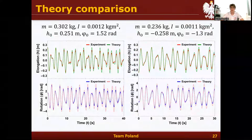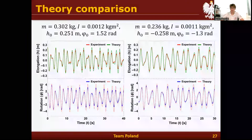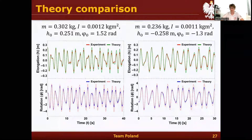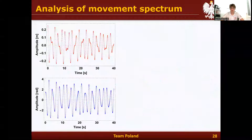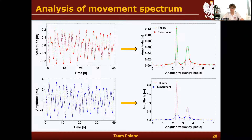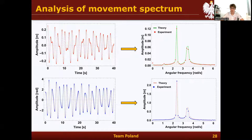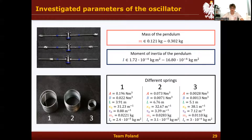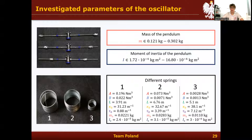We can see this agreement by comparing trajectories for different initial conditions. However, comparing trajectories isn't the best way to check if our theory truly predicts the experiment. So we made a Fourier transform and compared angular frequencies and amplitudes. You can see that there are two main angular frequencies, which correspond to our two normal modes of vibration. We further tested the theory by changing the mass of the pendulum, the moment of inertia, and using three different springs.